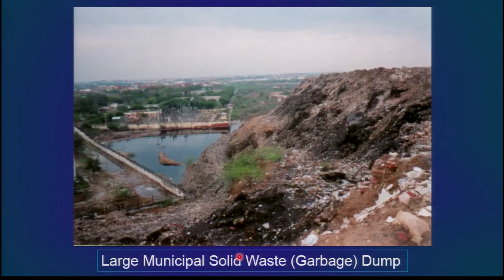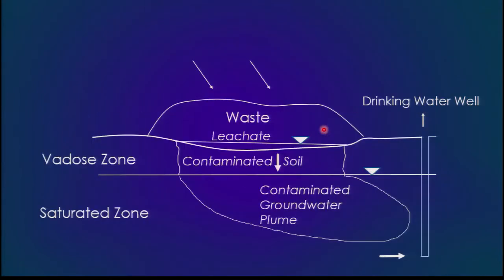Coming back to the original slide — the thick dark-colored leachate at the base of a garbage dump. What normally happens is that this dark-colored leachate goes into the soil and contaminates it. It goes further into the groundwater and contaminates it. And finally, the contaminated groundwater reaches a drinking water well and affects human health.